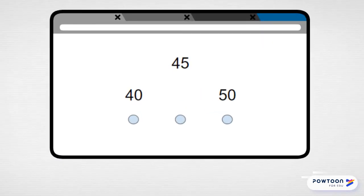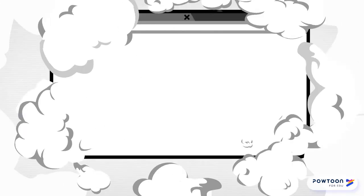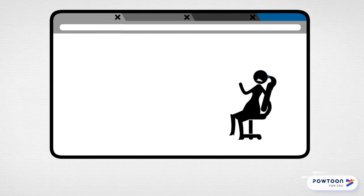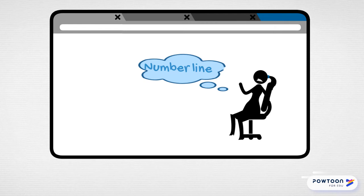Let's focus on the first problem. This problem has a 45 on top, then a 40 and a 50. What they want to know is whether 45 is closer to the 40, the 50, or right in the middle. The best thing to do when you have a problem like that is to think of a number line. A number line is the best way to figure out whether the number you're looking at is closer to one number or another.